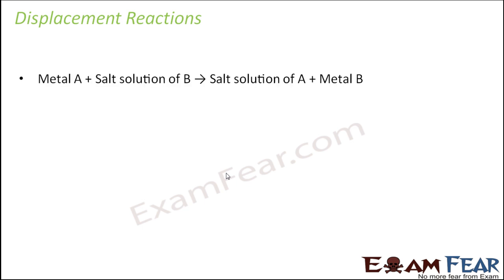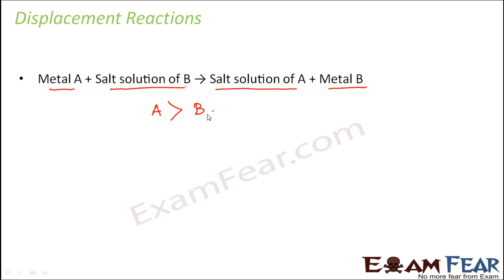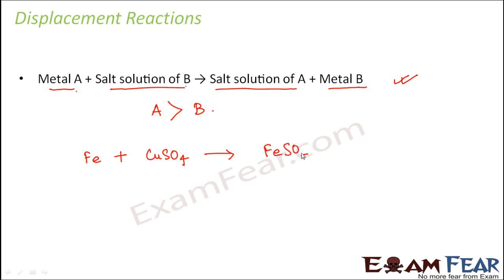The simple concept of displacement reaction: given metal A and metal B, when you combine metal A with the salt solution of metal B, you get the salt solution of metal A and metal B — but only if metal A is more reactive than metal B. If metal A is less reactive, there will be no reaction at all. For example, when iron reacts with copper sulfate solution: iron is metal A and copper is metal B. Since iron is more reactive than copper, iron displaces copper to form iron sulfate + copper, showing iron is more reactive than copper.